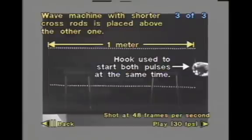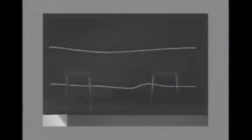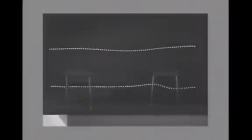In this next video, we have two wave machines stacked on top of each other. The one on top has shorter rods than the one on the bottom. This changes the media, and let's see what effect that has on wave speed. The two machines using two different sized crossbars represent two different media. The speeds of the waves are not the same.